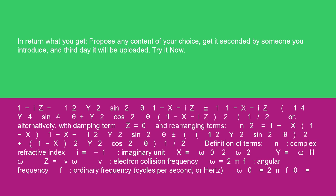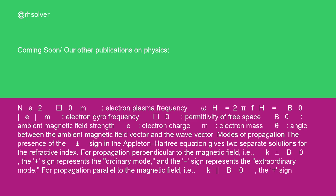n: complex refractive index. i = √-1: imaginary unit. x = ω₀²/ω². y = ωh/ω. z = ν/ω. ν: electron collision frequency. ω = 2πf: angular frequency. f: ordinary frequency, cycles per second, or hertz. ω₀ = 2πf₀ = √(ne²/ε₀m): electron plasma frequency.